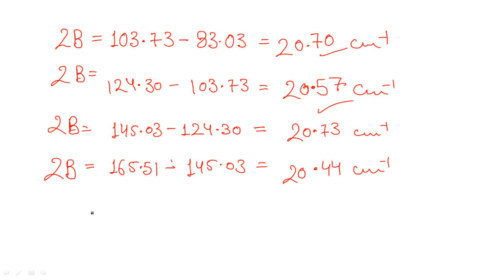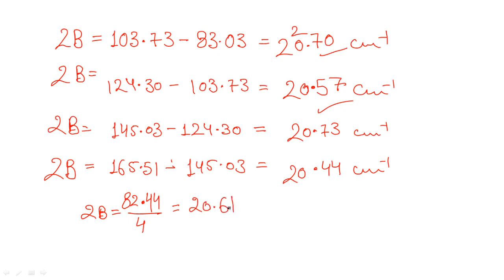The average separation, which equals 2B, is the sum of all four values divided by 4: (20.70 + 20.57 + 20.73 + 20.48) / 4 ≈ 20.61 cm⁻¹. Therefore, the rotational constant B ≈ 10.305 cm⁻¹. If the separations had been equal, you could have used that value directly without averaging.